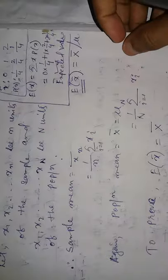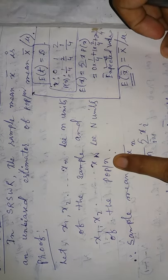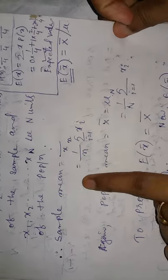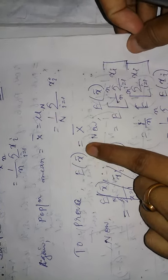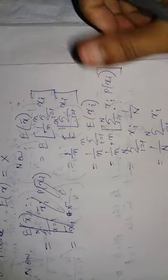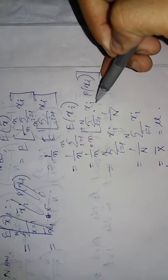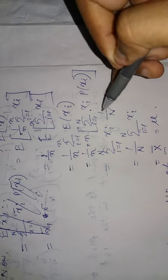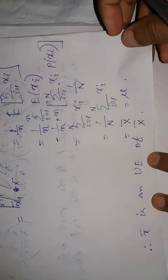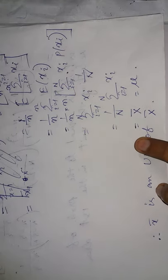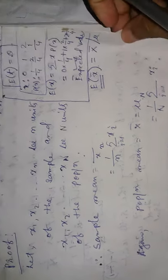This is the proof. We identified the distribution, sample observations and population observations and units, sample mean and population mean formulas. For expectation we did the calculation. Expectation of x bar: summation i from 1 to n is constant, and the probability is 1 by n for each unit, so we get the formula. If you understand, good. If not, ask me and I will explain again.